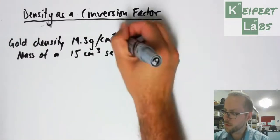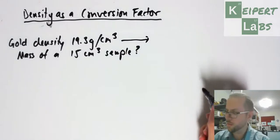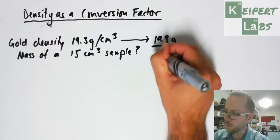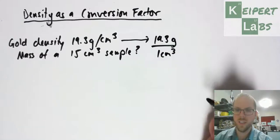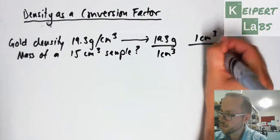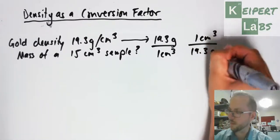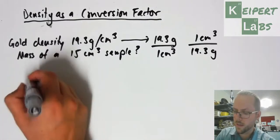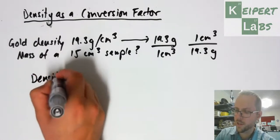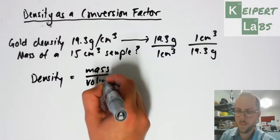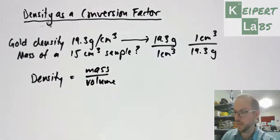I can say for every 19.3 grams of gold, I have one cubic centimeter, or for every one cubic centimeter of gold, I have 19.3 grams. Remember that density is this relationship of an object's mass to its volume.